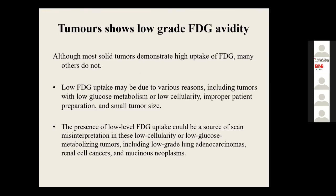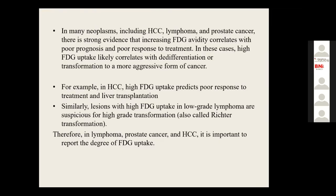Not every tumor shows high-grade FDG uptake. Cancers showing low-grade FDG uptake include low-grade lung adenocarcinoma, renal cell carcinoma (RCC), mucinous neoplasms, hepatocellular carcinoma, lymphoma, and prostate cancers — where FDG uptake is variable. If these tumors show high-grade FDG uptake, it relates to poor prognosis and poor treatment response. Therefore, for lymphoma, prostate cancer, HCC, and RCC, it is important to report the degree of FDG uptake — whether high, moderate, or low-grade.